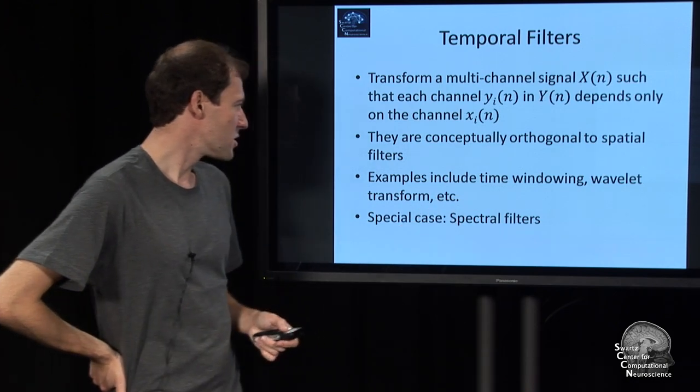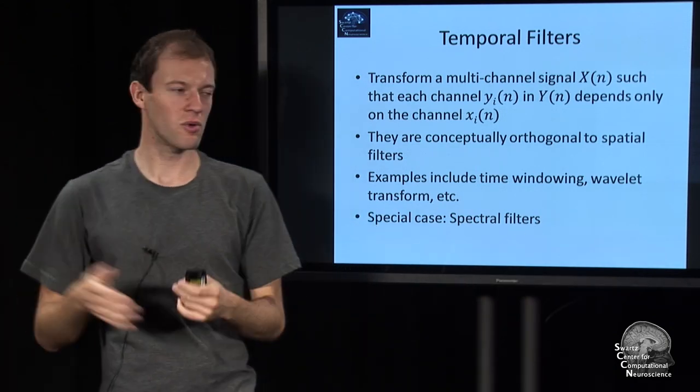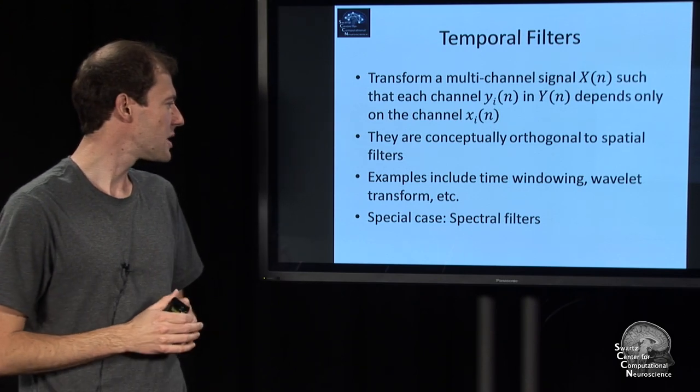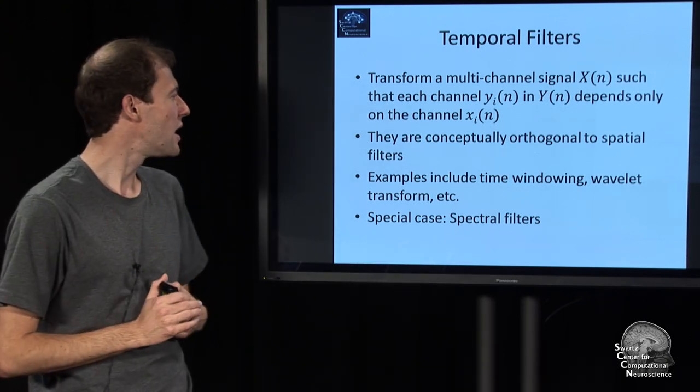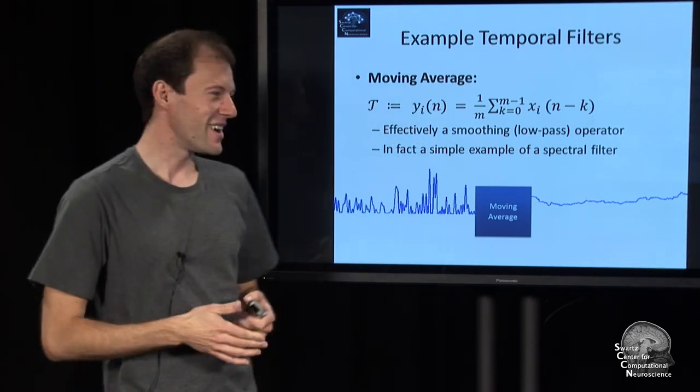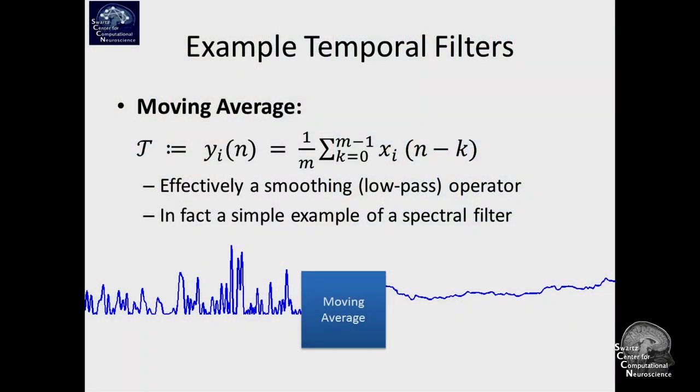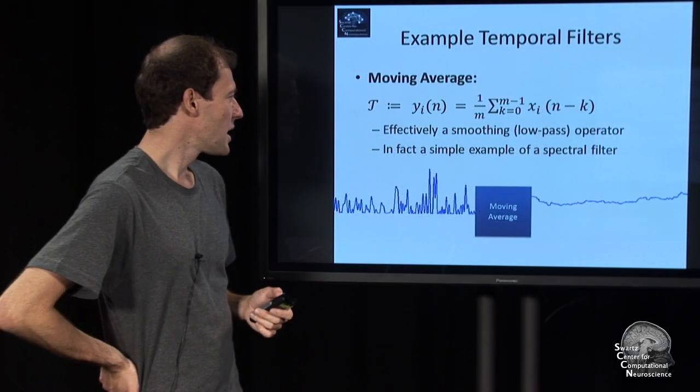Some of these examples include applying a time window, such as setting everything to zero that's after a particular time point or before. Wavelet transform and so on. Here's a very simple example of a temporal filter, moving average. The ith channel of the output is the sum of m samples of the input divided by m, so it's the average. If you apply this to every sample, you basically get a moving average. That's what it's called, also called running mean.